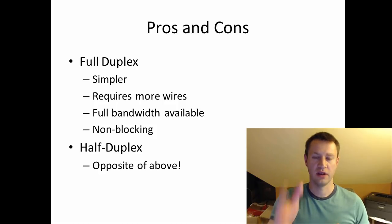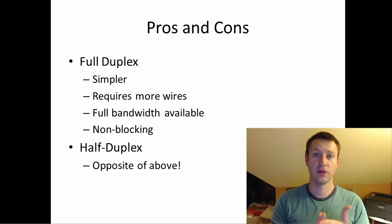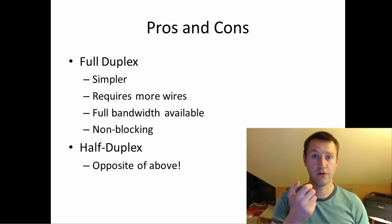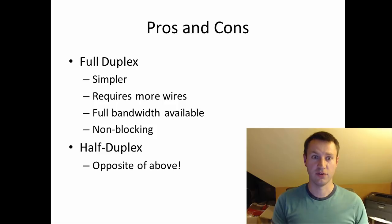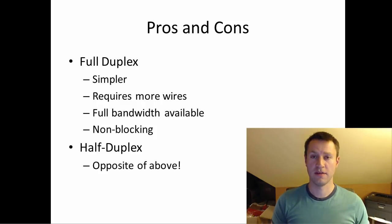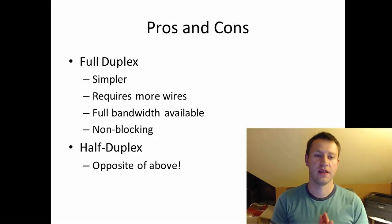Full duplex is non-blocking — you don't block the other person sending data to you when you're sending data to them. Half duplex is basically all the opposite: it's generally more complicated because there's an agreement that needs to occur. In full duplex you can just talk whenever you want; in half duplex you need some handshaking that says 'I'm done, your turn.' It requires fewer wires, which is a big benefit if you're pin-constrained. It's half the bandwidth because only one person can talk at any given time, and it is blocking.